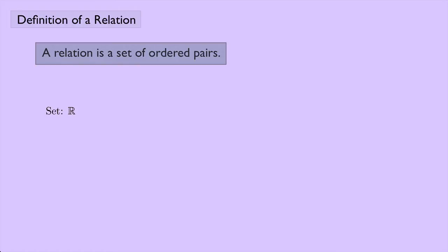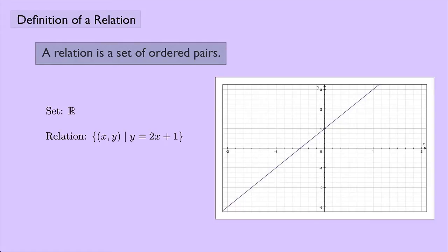Let's look at an example. Suppose I have the set of real numbers and I want to look at the relation that's the set of ordered pairs (x, y) such that y equals 2x plus 1. I could graph this, this would just look like a line, and then I could say something like the point (0, 1) that falls on the line would be in the relation,